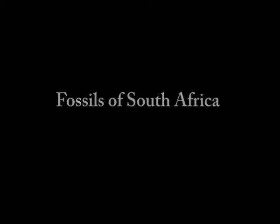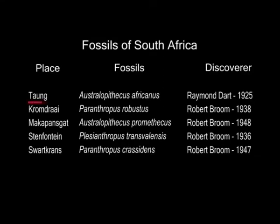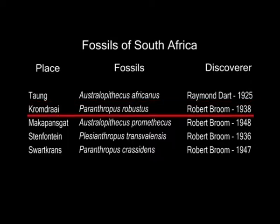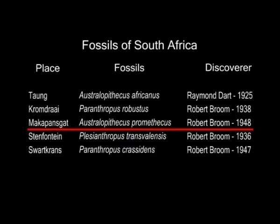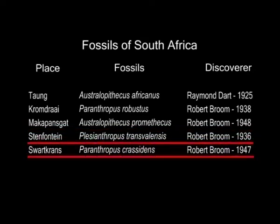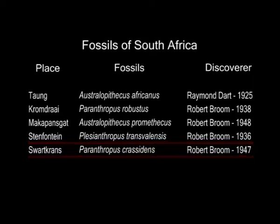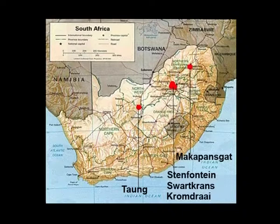The following are the fossils along with the sites found in South Africa and East Africa. In Taung, Australopithecus africanus was first discovered by Professor Raymond Dart in 1925. In Kromdraai, Paranthropus robustus was discovered by Robert Broom in 1938. In Makapansgat, Australopithecus prometheus was also discovered by Robert Broom in 1948. In Sterkfontein and Swartkrans, Plesianthropus transvaalensis and Paranthropus crassidens were discovered by Robert Broom in 1936 and 1947. In South Africa, the gracile forms occur at three sites: Taung, Makapansgat, and Sterkfontein, and the robust form at two sites: Kromdraai and Swartkrans.